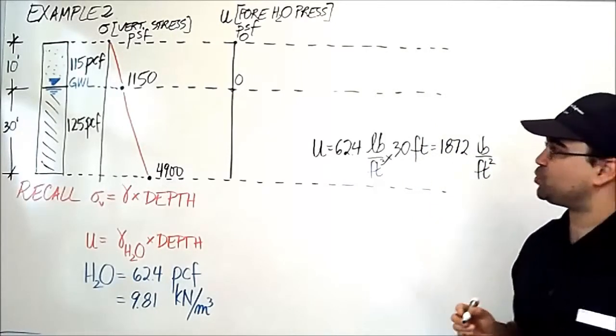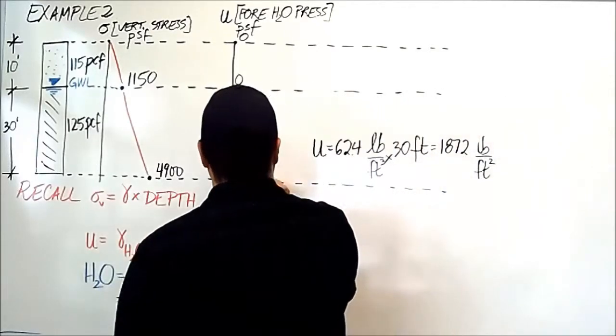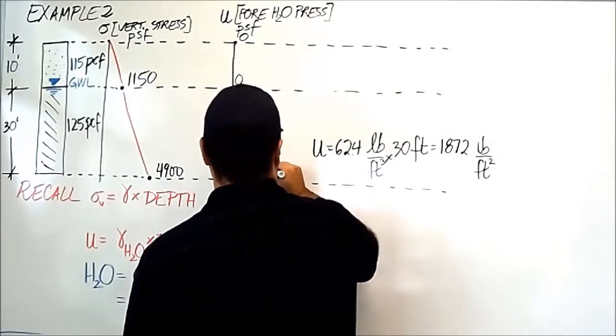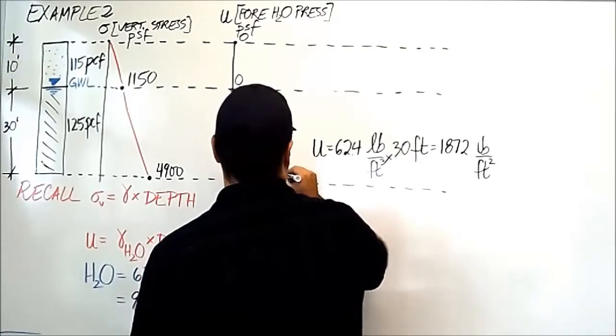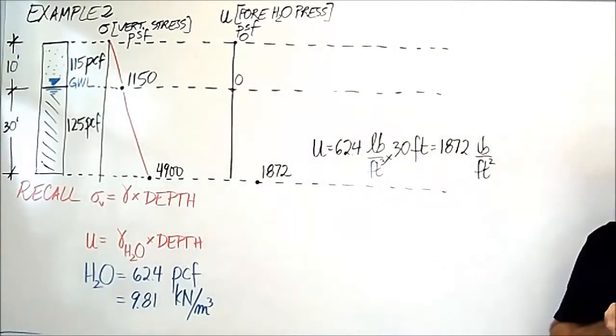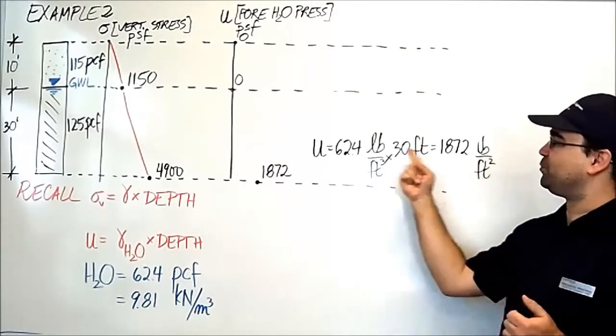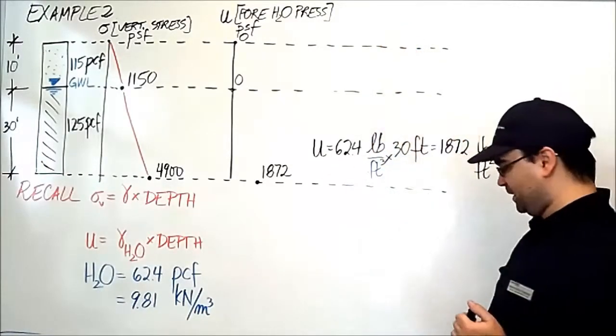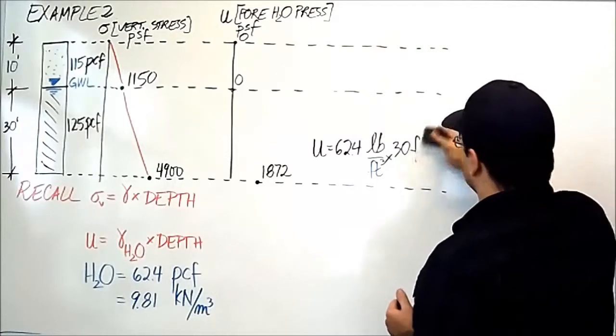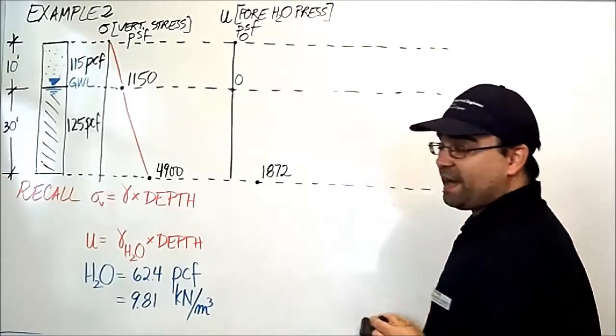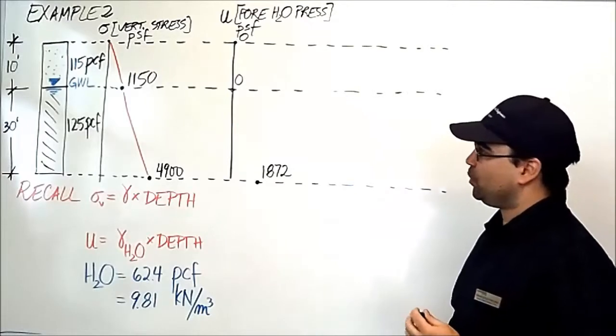This gives us a pore water pressure of 1,872 pounds per square feet. So that's what I'm going to show here: 1,872 pounds per square feet. In the interest of space, I'm not going to erase this because I have more to write at this location. The benefits of the video, though, is that you can pause, rewind, and go back to look at it.